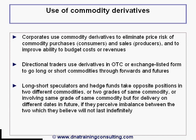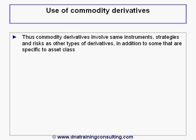Long-short speculators and hedge funds take opposite positions in two different commodities, or in two grades of the same commodity, or involving the same grade of the same commodity but for delivery on different dates in the future, if they perceive an imbalance between the two which they believe will not last indefinitely. In short, commodity derivatives involve many of the same instruments, strategies and risks as other types of derivatives, in addition to one or two that are specific to this asset class.